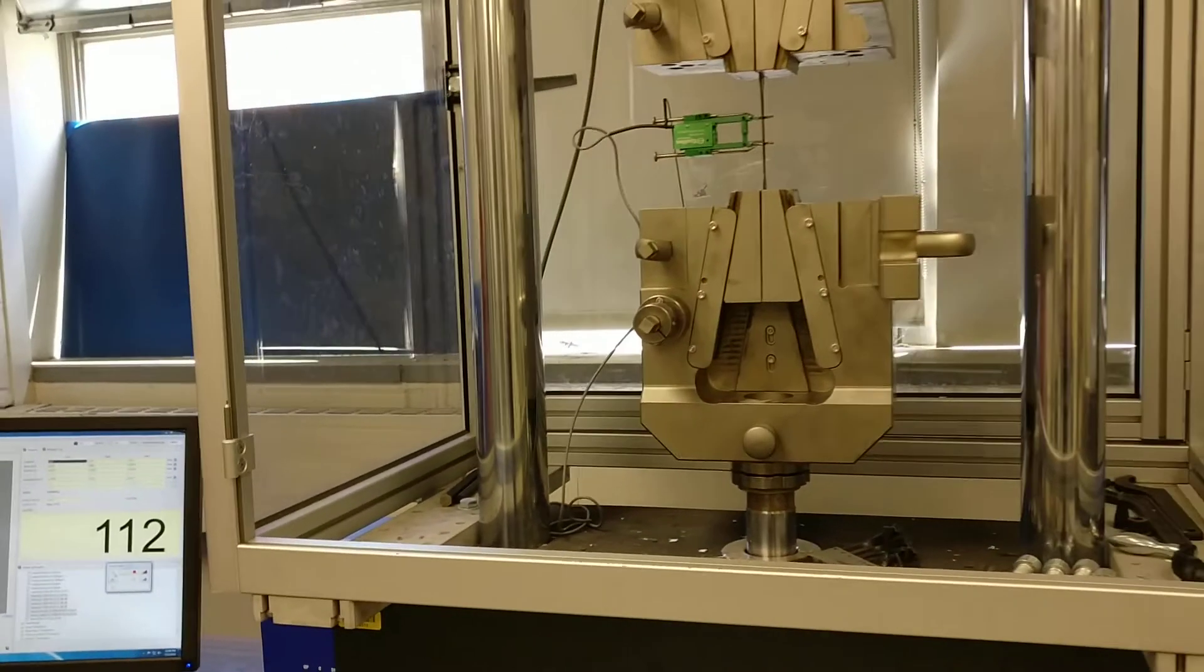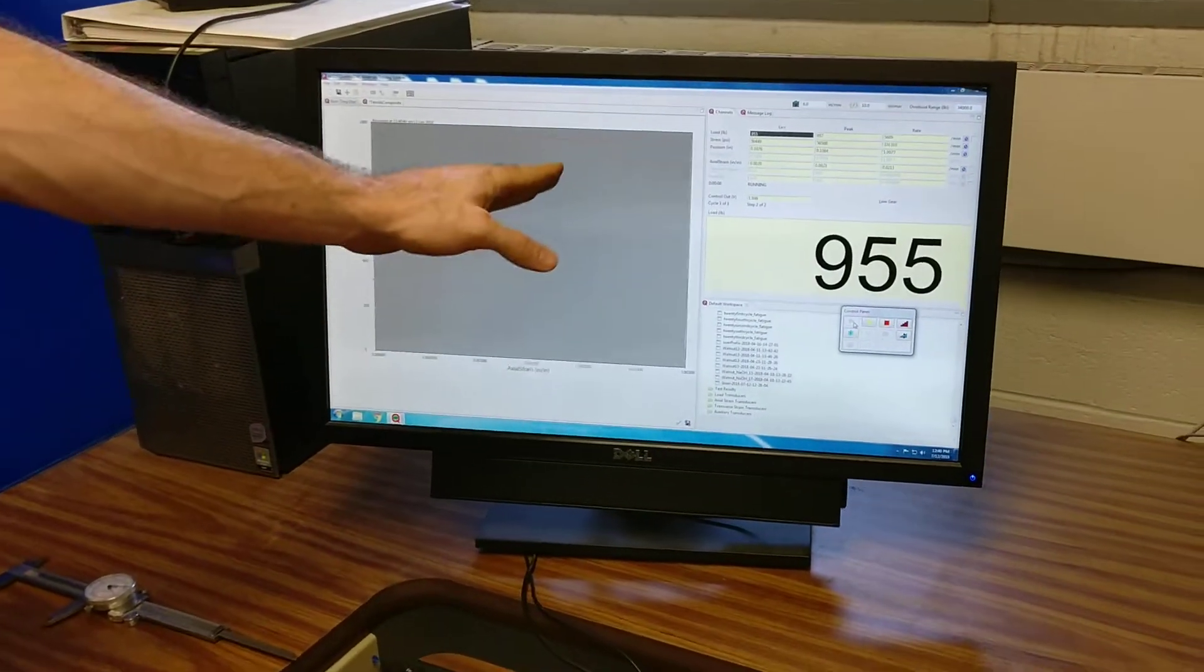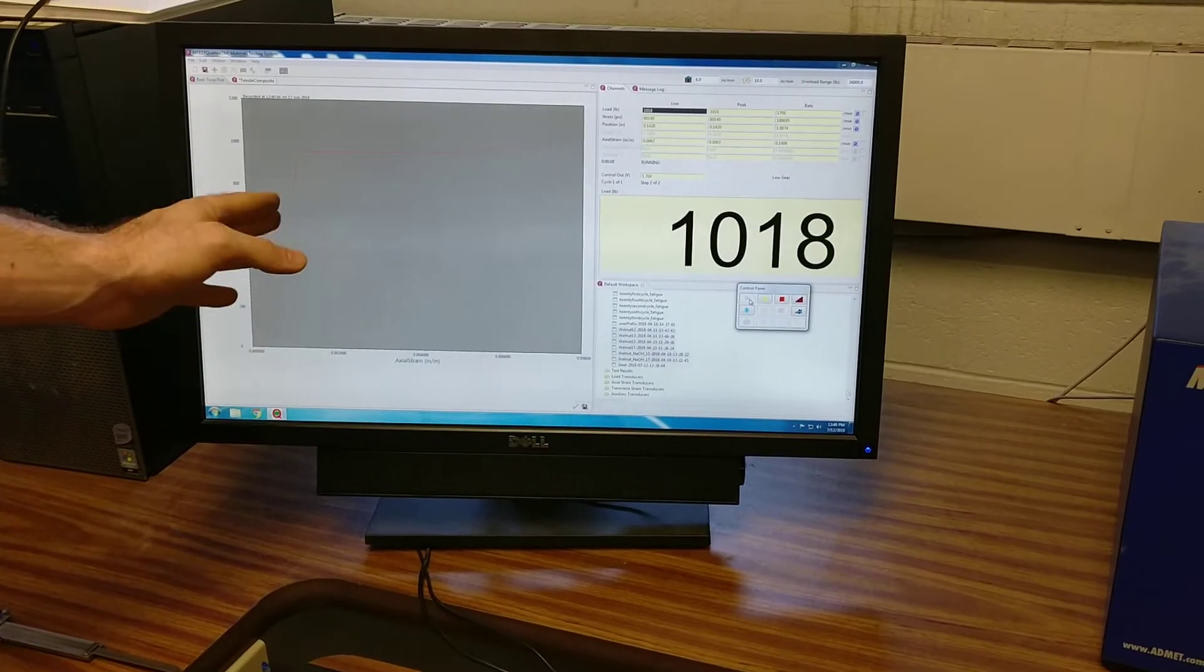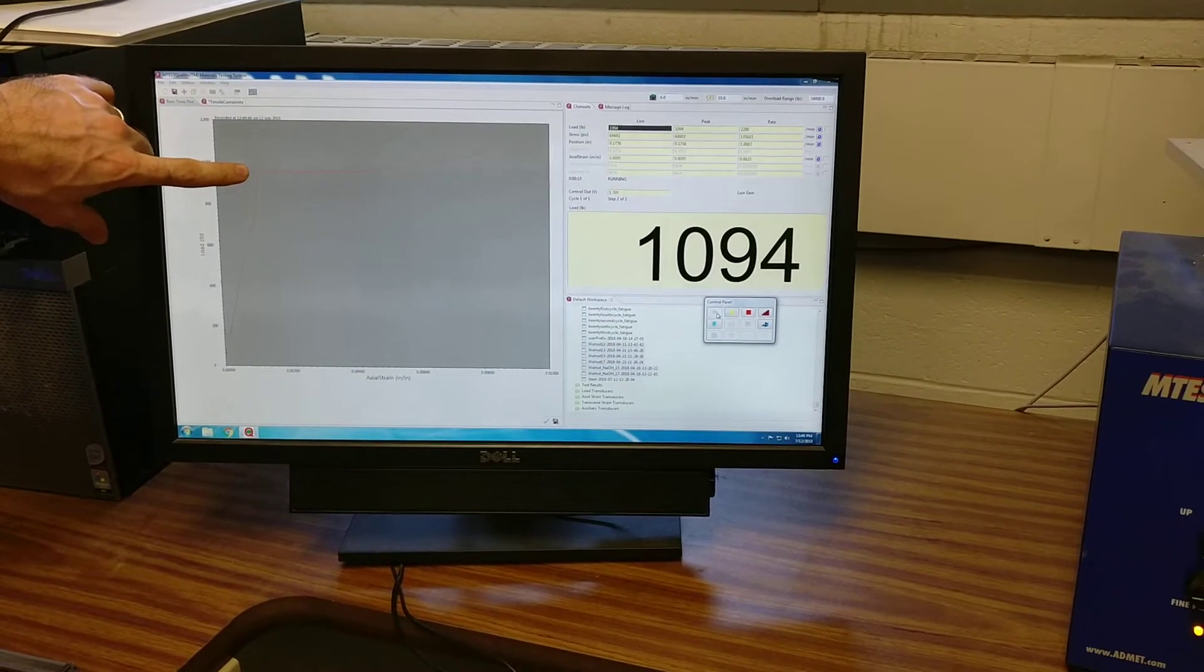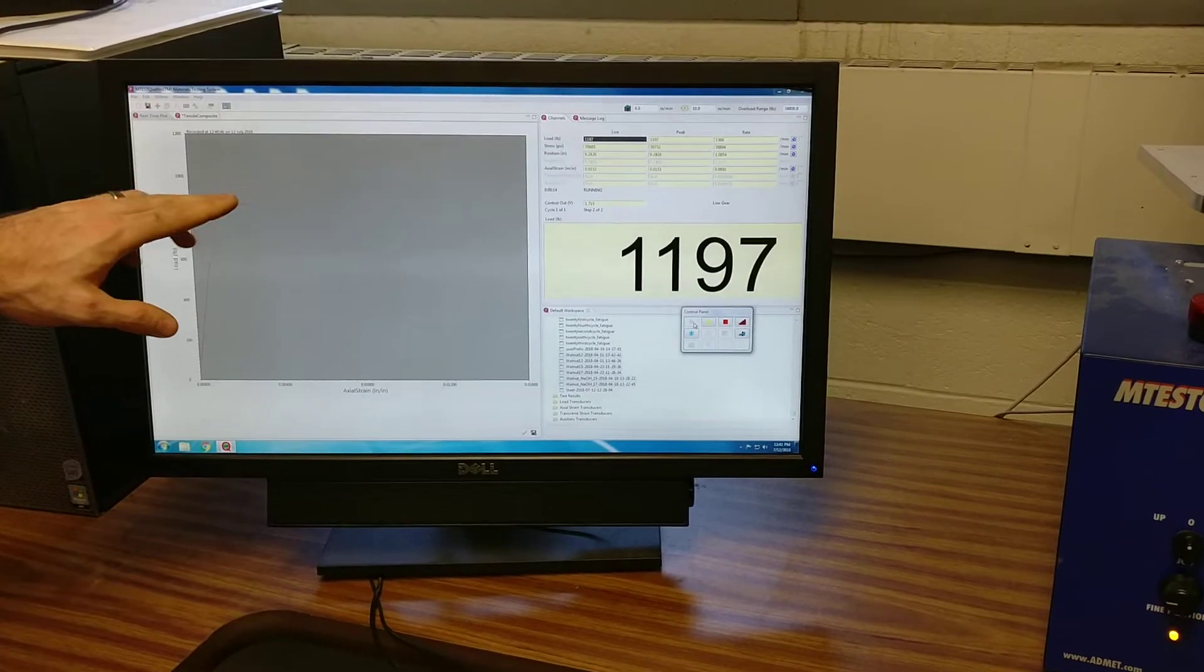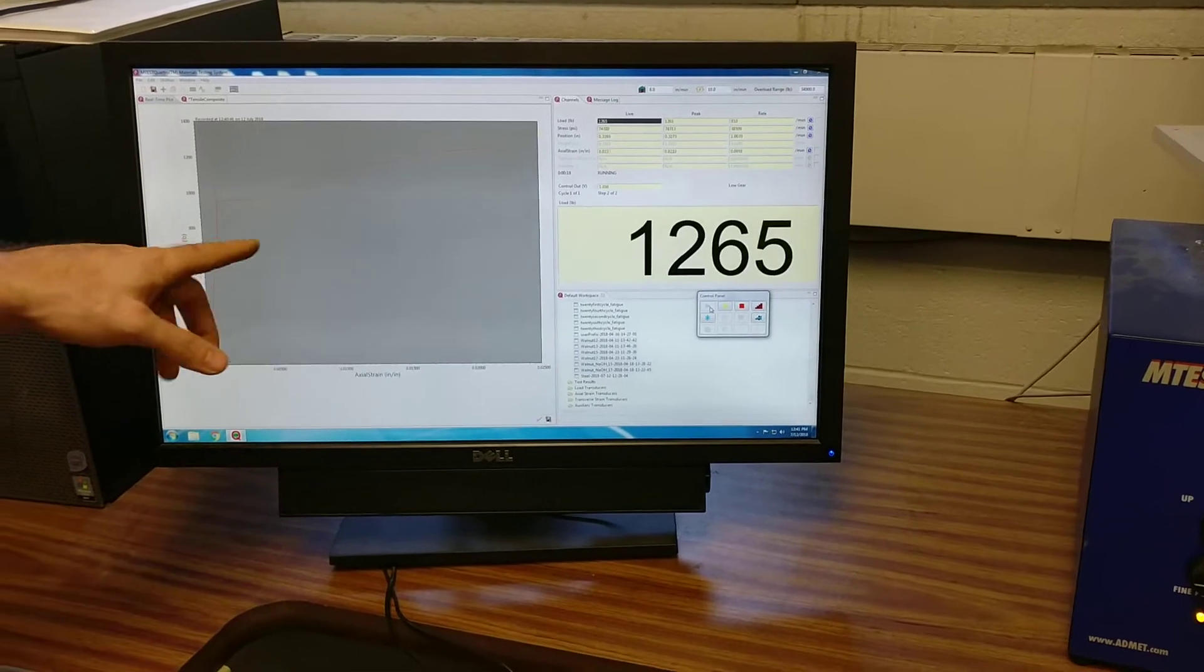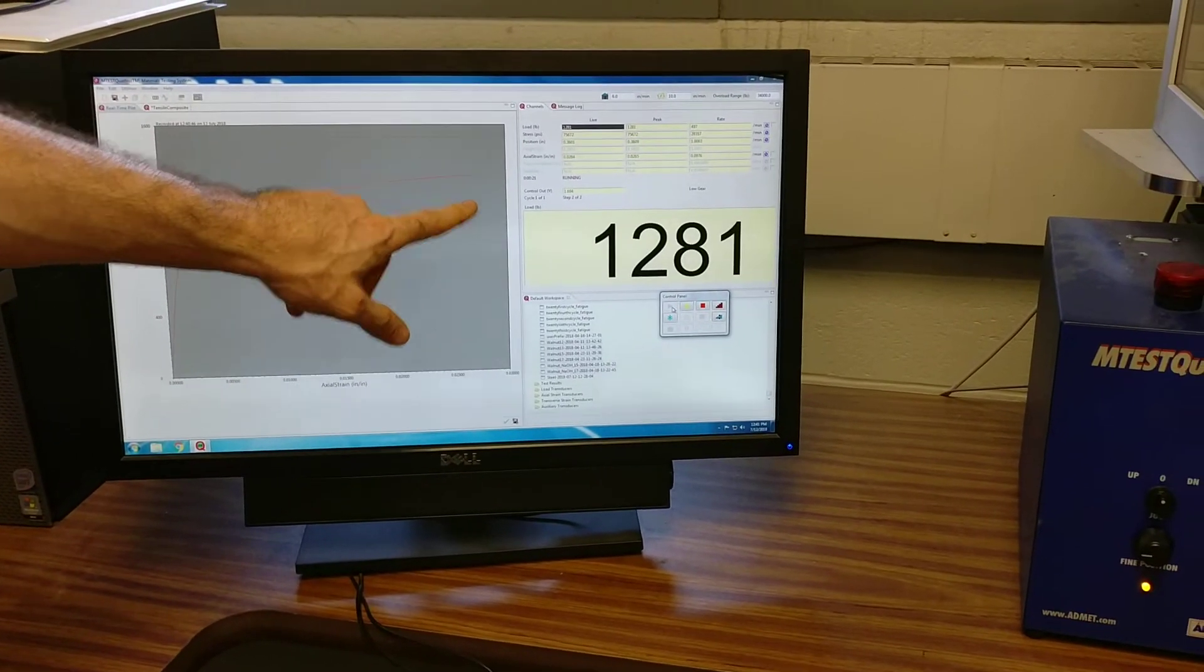And what you'll notice here is that that linear portion is pretty straight. This is the yield point. As this curve is increasing, this is some strain hardening that's going on with my sample until we're going to reach some maximum load up here.